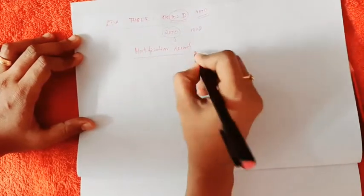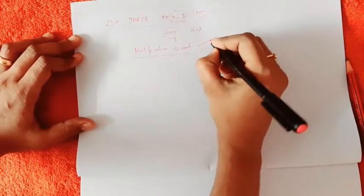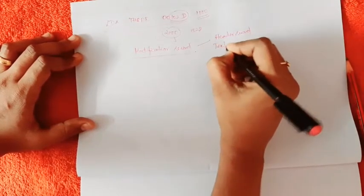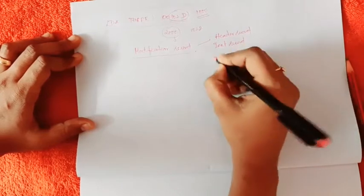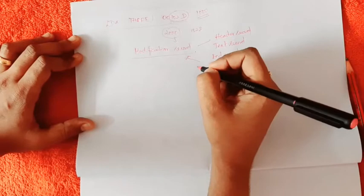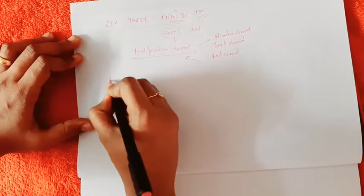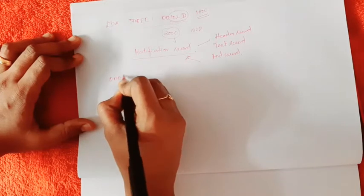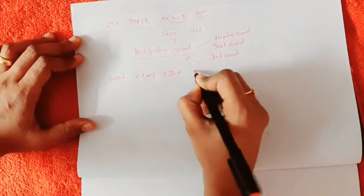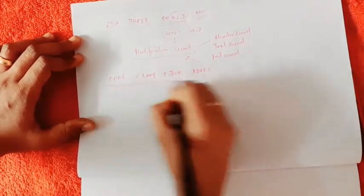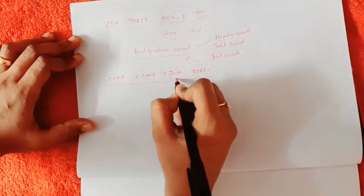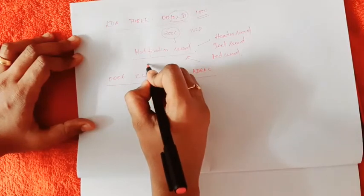That's why we use the modification record. So far we have seen many records like header record, text record, and end record. Now we are going to study about the modification record. We will take an example: address 0006, CLOOP JSUB RDREC. This is one instruction, and as we know, this is a format 4 instruction. Before working through it, let's see the template of the modification record.